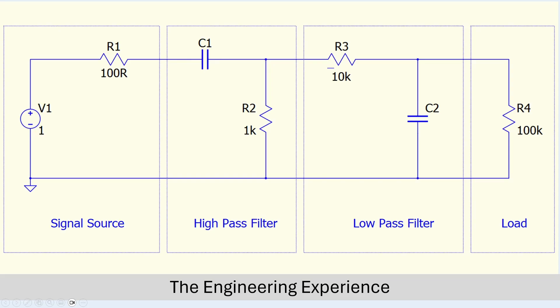We have a source signal source impedance of 100 ohms, so that means our high pass filter must have an input impedance of at least 10 times what's driving it. So if we are driven by 100 ohms then we need 100 times 10 input impedance for this filter, meaning the high pass filter impedance is going to be 1 kilo ohm. Now that we know the high pass filter impedance is 1 kilo ohm, this circuit is going to be driving the low pass filter. So the same rule applies and we can set the resistance value for the low pass filter to be equal to 10 times 1 kilo ohm, giving us a resistance value of 10 kilo ohms.